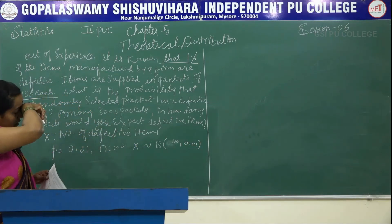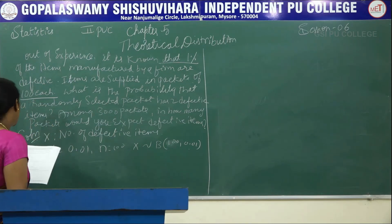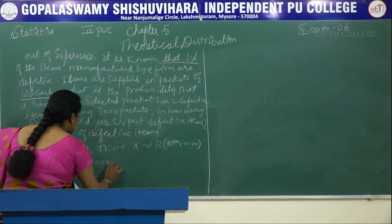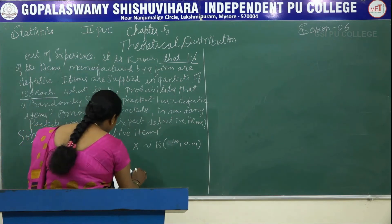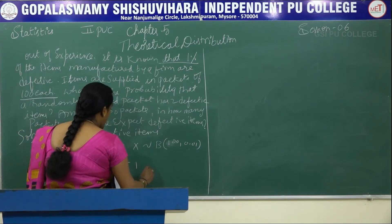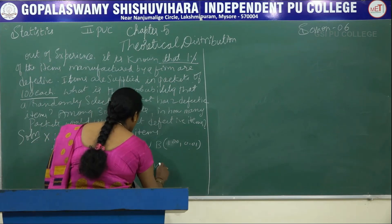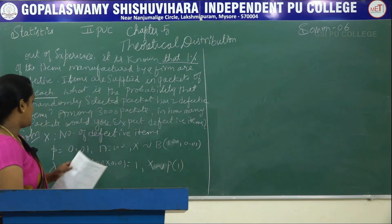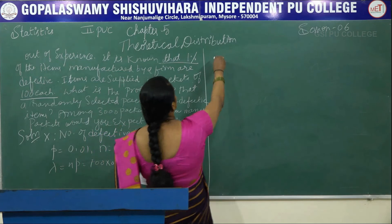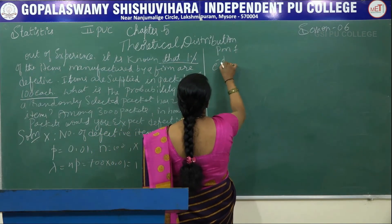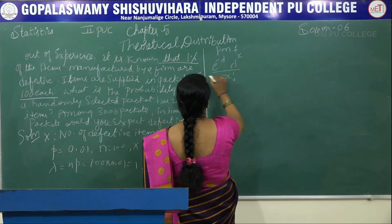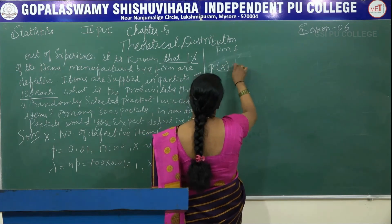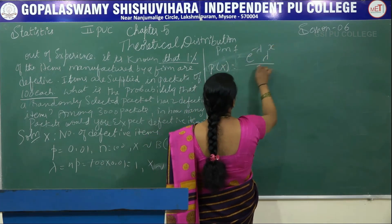So lambda is equal to n into p, that is 100 into 0.01, so lambda value is 1 again. X follows Poisson distribution with parameter 1, that is lambda is equal to 1. The PMF is P(X) equals e to the power minus lambda times lambda to the power x divided by x factorial, for x equal to 0, 1, 2, and so on to infinity.